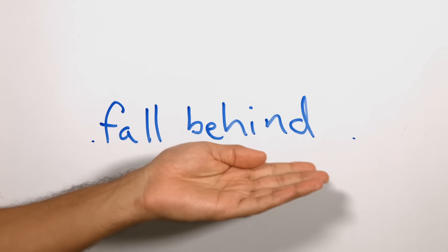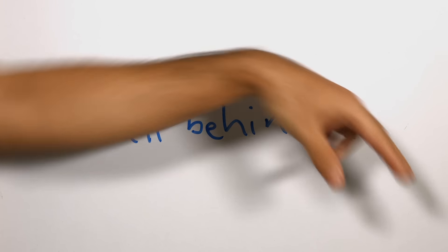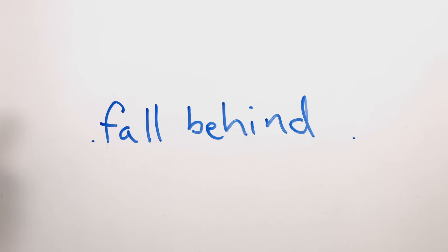To fall behind basically means to not be able to keep up with something. This something can be a march, for example, if you're walking along in a march and you are behind everybody else, you cannot do the same speed as everyone else, then you are falling behind in the march.